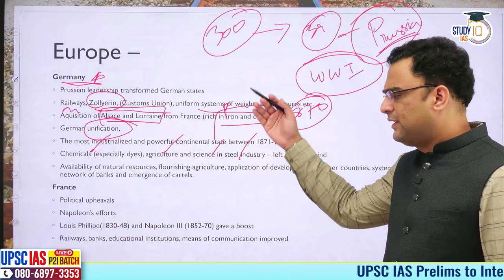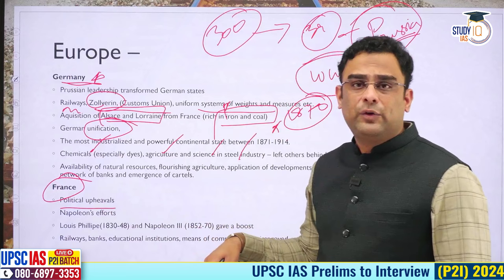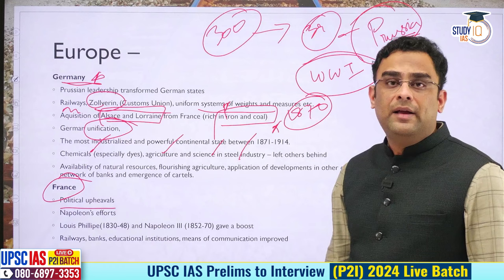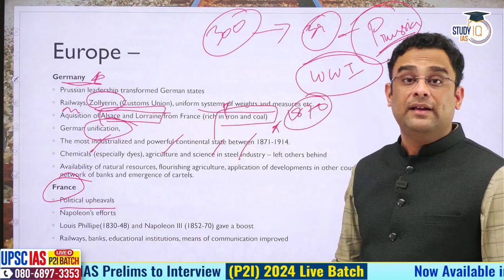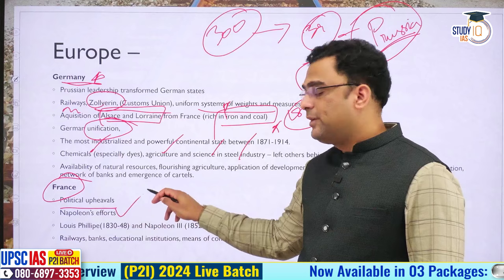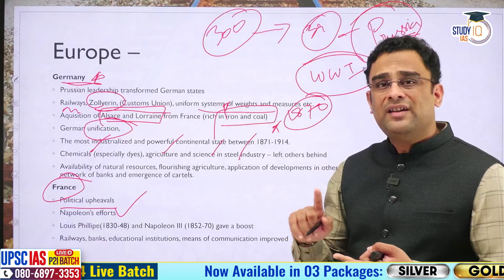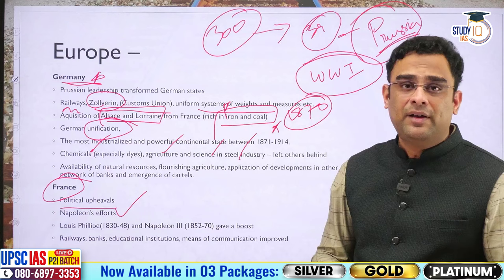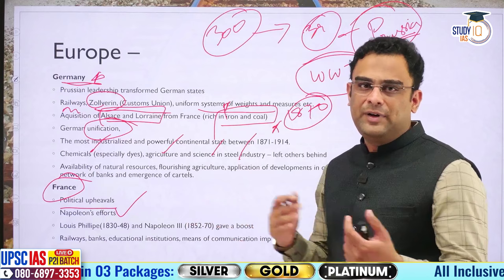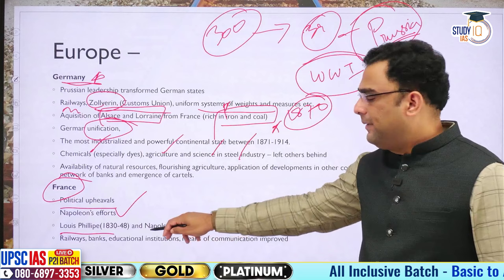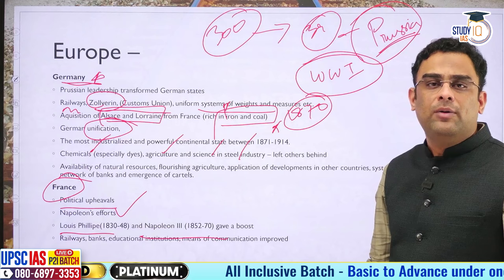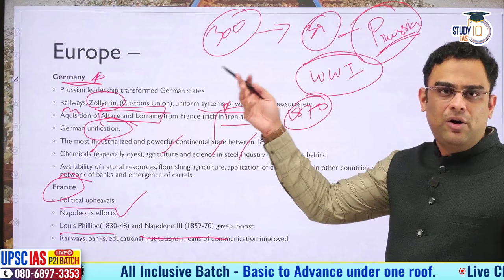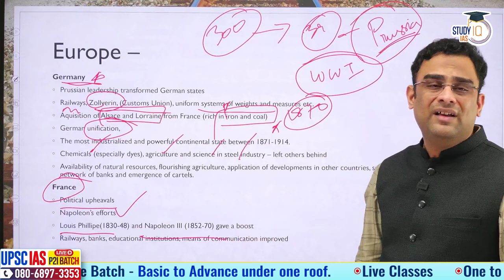France was constantly going through political upheavals during Napoleon's times and subsequently. Nevertheless, competition from Britain made French rulers realize the importance of industrial revolution. Napoleon and later Louis Philippe and Napoleon III tried to industrialize France — laying infrastructure, railways, banking systems, and boosting shipping. While France could not match Britain or Germany, by World War I it was also a significant industrialized nation.